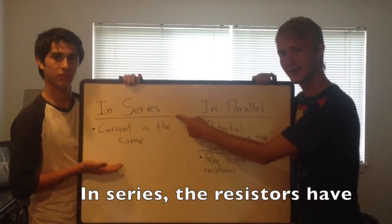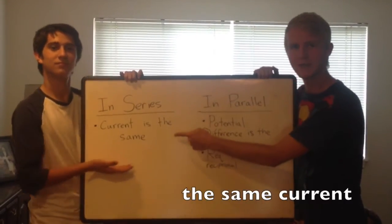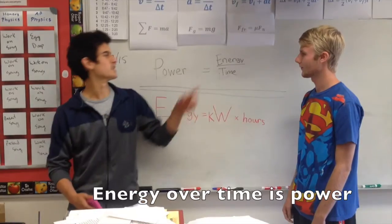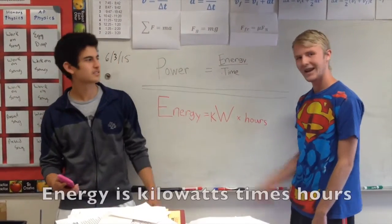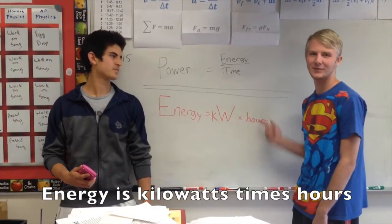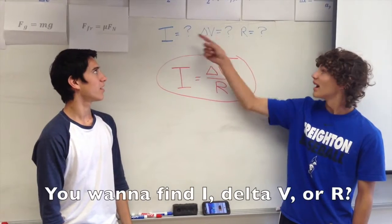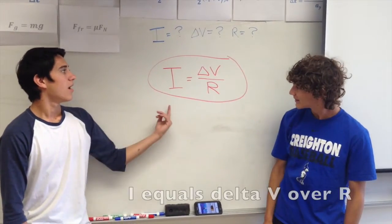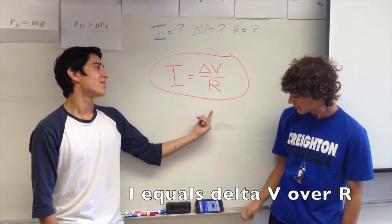The resistor is a deterrent. In a series, the resistors have the same current. Energy over time is power. Energy is kilowatts times hours. You want to find I, delta V, or R? I equals delta V over R.